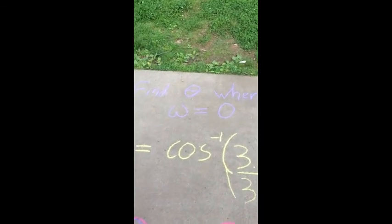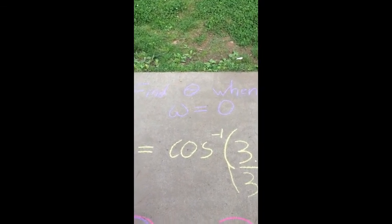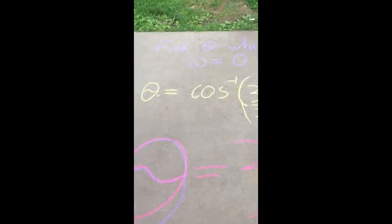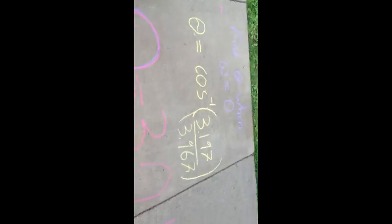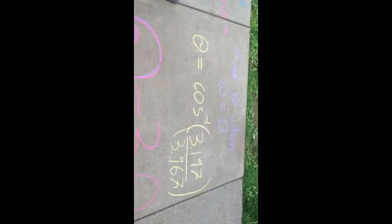Finally, to find theta when omega equals zero, which is when it stops rotating about B, we use this equation: theta equals arccosine of 3.197 over 3.967.